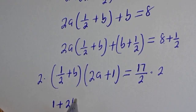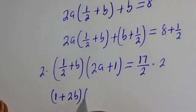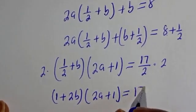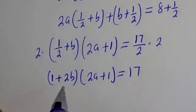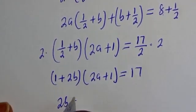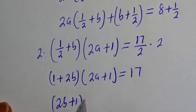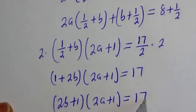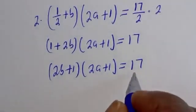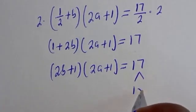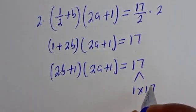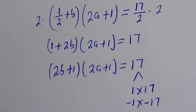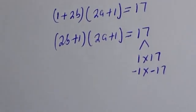After multiplying both sides by 2 to clear the fraction, we get 2b plus 1 bracket 2a plus 1 is equal to 17. Note that 17 can be written as 1 multiplied by 17, or minus 1 multiplied by minus 17. There are two cases.